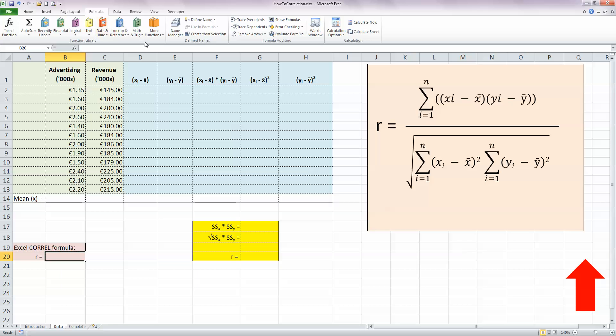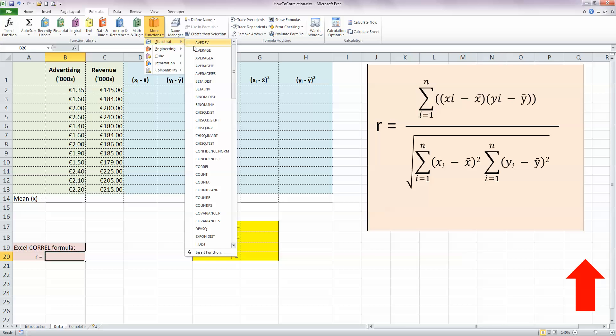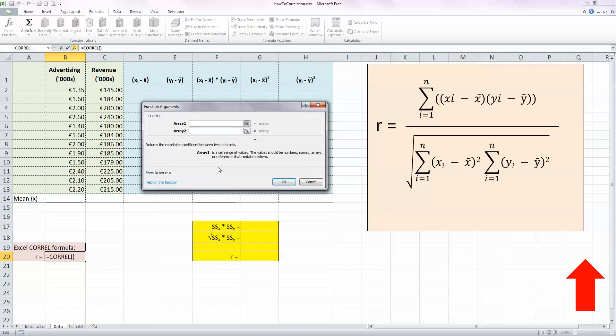So check the formula ribbon across the top, go into the more functions section, select statistical, and scroll down here until you reach the Corel function. So this is going to give me my value of R. So select that, and this displays my function arguments window.